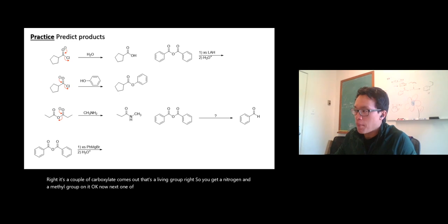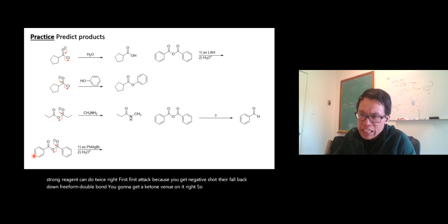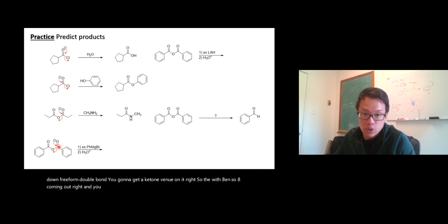Now next one, phenylmagnesium bromide. So these are strong reagents, can do twice. First attack, you get negative charge there. Fall back down, form double bond, you're going to get a ketone, phenyl on it. So the benzoate coming out, and you get phenyl on it, so you get ketone.